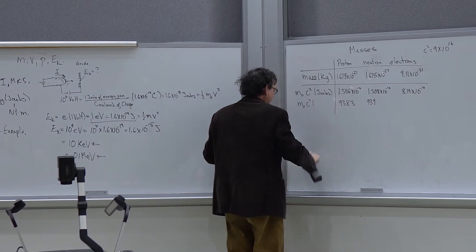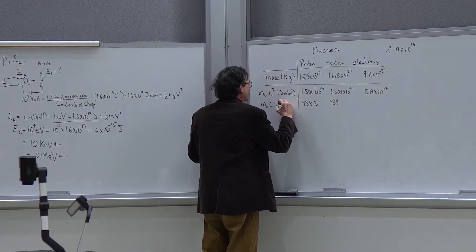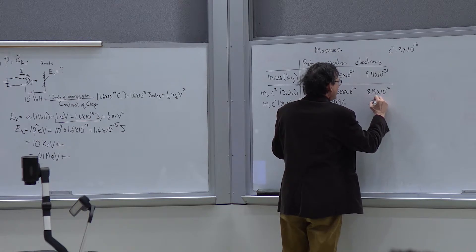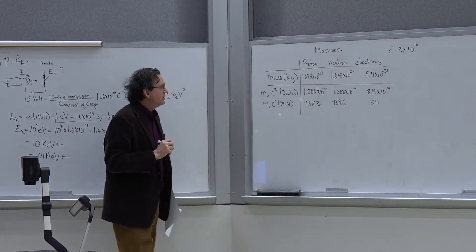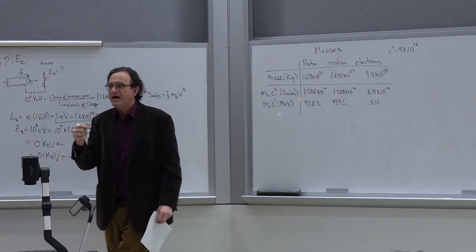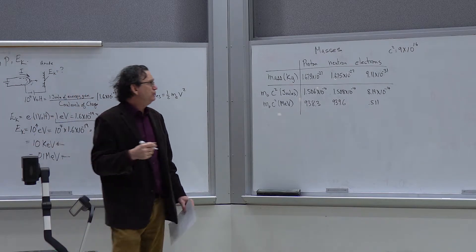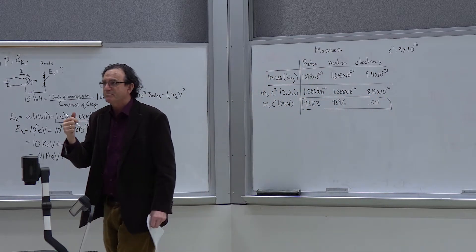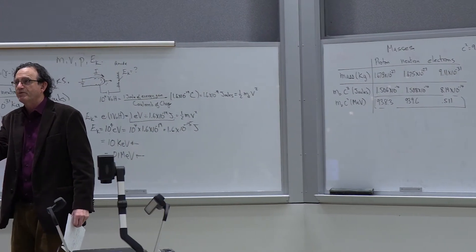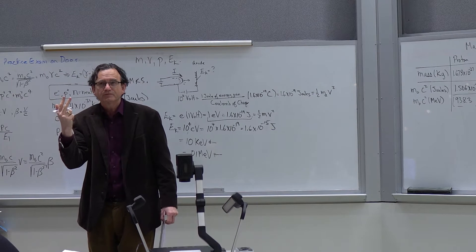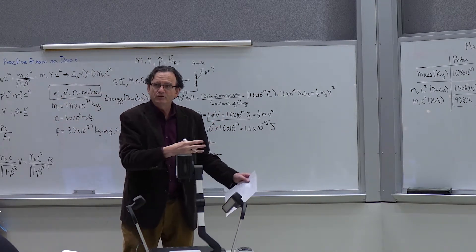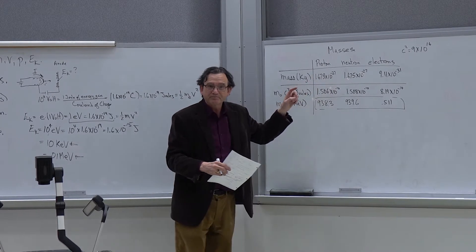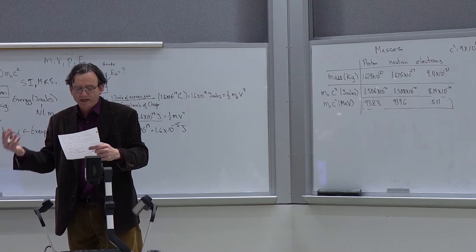The results are: m₀c² for the proton = 938.3 MeV, for the neutron = 939.6 MeV, and for the electron = 0.511 MeV. When you do a calculation, you do not need the kilogram values — these three MeV values are what you need. There are only three particles in this course; these values will be provided. They're much easier to use than the kilogram numbers.